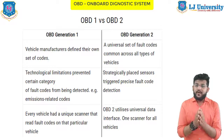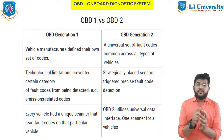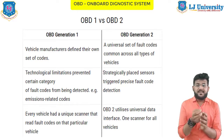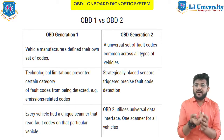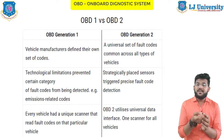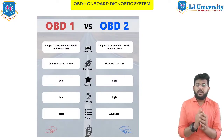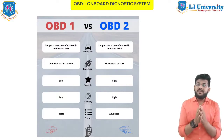Now let's see the main differences between OBD-1 and OBD-2. In OBD-1, vehicle manufacturers defined their own set of codes; in OBD-2, all fault codes are universal across all vehicle types. In OBD-1, technological limitations prevented certain fault codes from being detected, such as emissions-related codes; in OBD-2, strategically placed sensors enable more precise fault code detection. OBD-1 required a unique scanner per vehicle; OBD-2 uses a universal data interface, so one scanner works for all vehicles. OBD-1 used cables; OBD-2 uses Wi-Fi or Bluetooth, providing greater accuracy. OBD-2 also has far more advanced features.